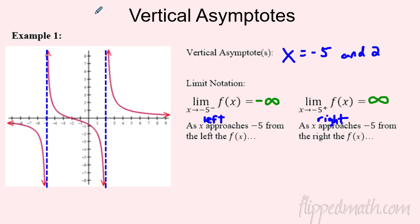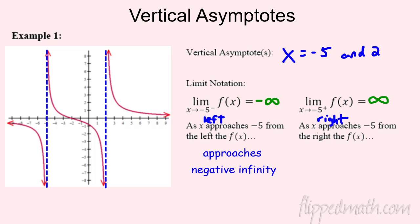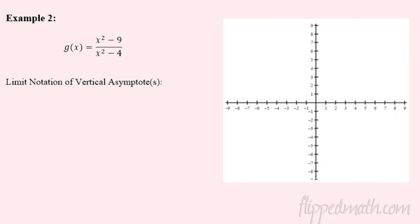So we're looking at these asymptotes to see whether the function goes to positive infinity or negative infinity. In words: as x approaches negative five from the left, the function approaches negative infinity. As x approaches negative five from the right, f(x) approaches positive infinity. That's the vocabulary and notation we need.